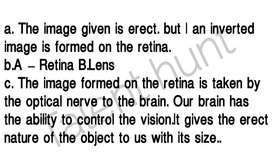The image is erect but an inverted image is formed on the retina. A is the retina, B is the lens. The image formed on the retina is taken by the optical nerve to the brain. Our brain has the ability to control the vision and gives the erect nature of the object to us.